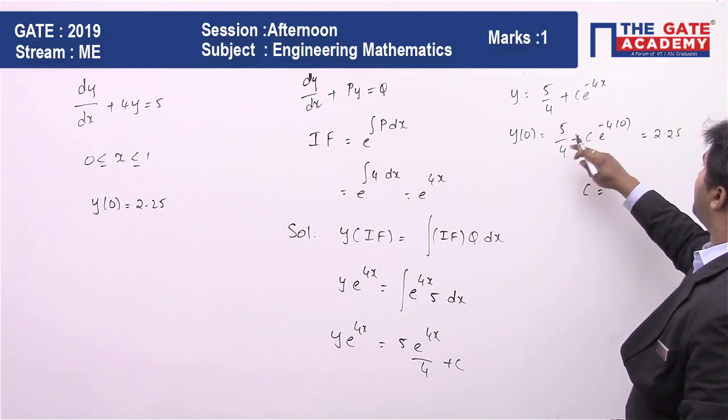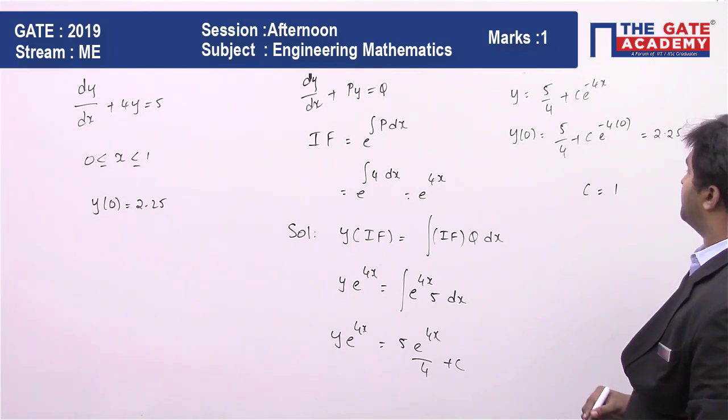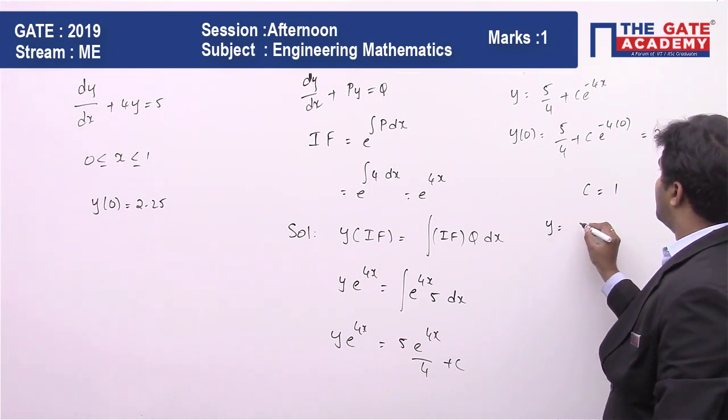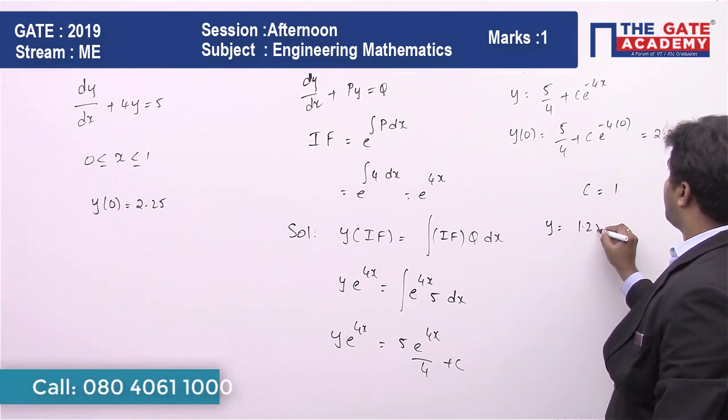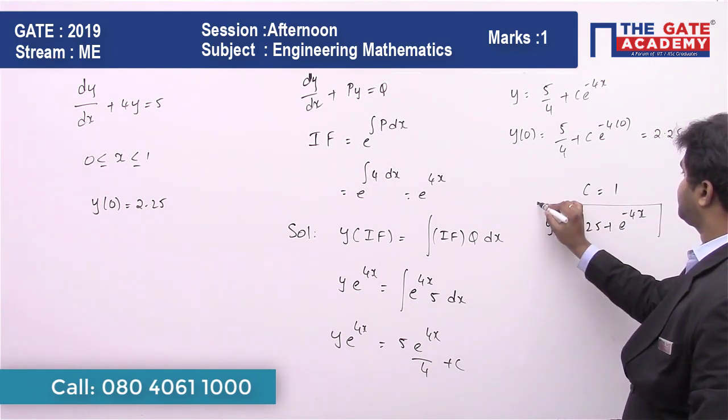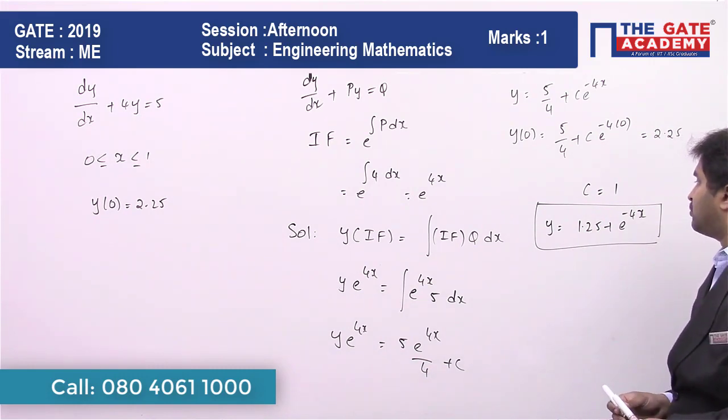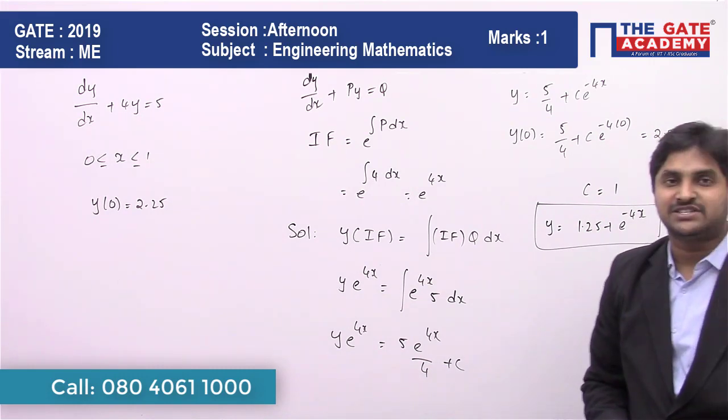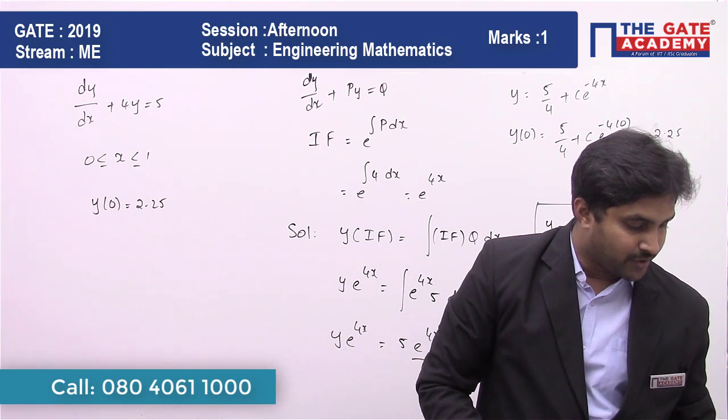So c will be equal to 2.25 - 1.25, which is equal to 1. So y = 1.25 + e^(-4x). y = 1.25 + e^(-4x).